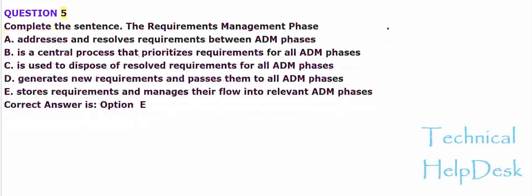Question 5. Complete the sentence. The Requirements Management phase A. Addresses and resolves requirements between ADM phases. B. Is a central process that prioritizes requirements for all ADM phases. C. Is used to dispose of resolved requirements for all ADM phases. D. Generates new requirements and passes them to all ADM phases. E. Stores requirements and manages their flow into relevant ADM phases. Correct answer is Option E.